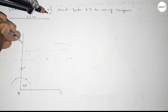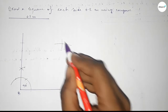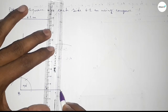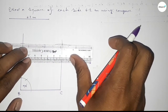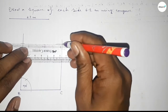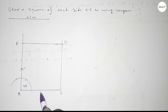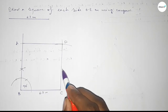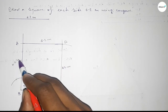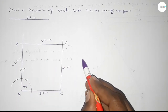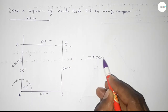Drawing an arc with the same length, putting the compass here and cutting here so both curves intersect at a point. Joining this side and then joining this side to get the square. Taking point A here and point D here. This side is 6.2 cm, this side 6.2 cm, this side 6.2 cm, and this side also 6.2 cm.